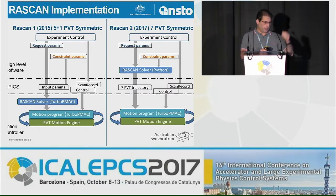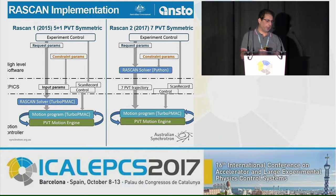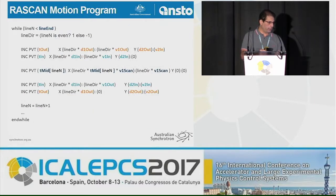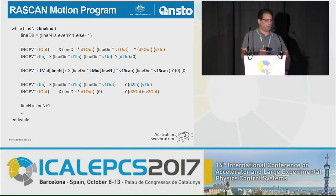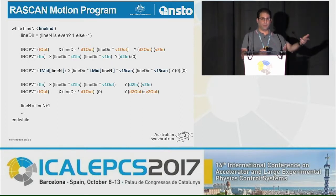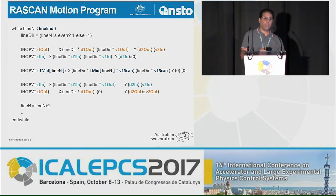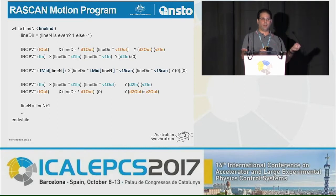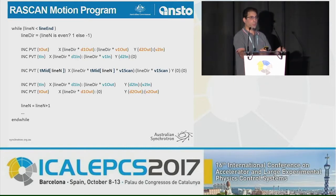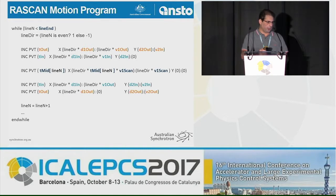The RASCAN solver for version 2 is implemented in Python at the high-level language. This is a close look at the motion program code, which is a simple loop of those five PVT points — that's what the 5+1 means. The blue and orange parameters are the output of the closed-form solver, coming out of formulas programmed in the controller.